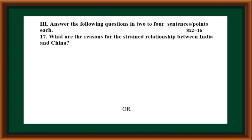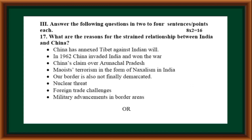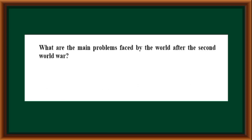Third main — Answer the following questions in two to four sentences or points each. What are the reasons for the strained relationship between India and China? China annexed Tibet against Indian will in 1962; China invaded India and won the war; China's claim over Arunachal Pradesh; Maoist terrorism in the form of nationalism in India.